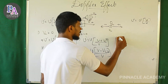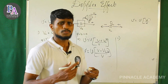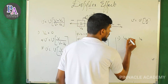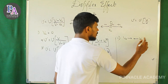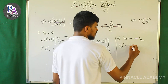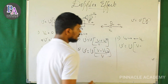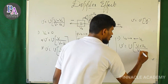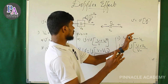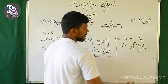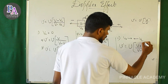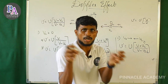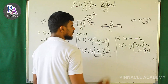The third case: both source and listener are moving. New-dash equals new into (V minus VL) divided by (V minus Vs), applying the appropriate signs — positive if moving toward each other, negative if moving away — for both VL in the numerator and Vs in the denominator.